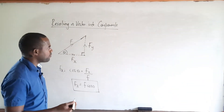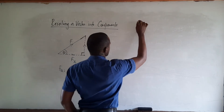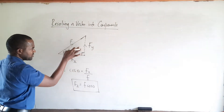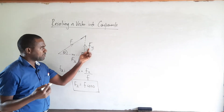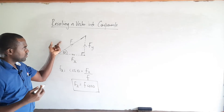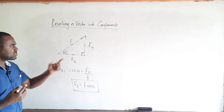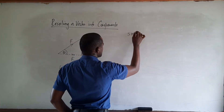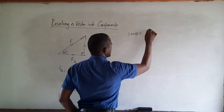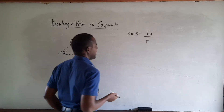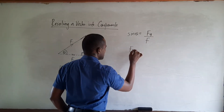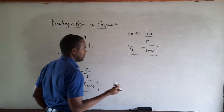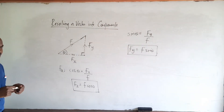Now let's examine the vertical component Fy. Since we're talking about the vertical component, this component is opposite to the angle, and we're dealing with the side opposite to the angle as well as the hypotenuse. This means we use the trig ratio sine. So sine theta equals opposite Fy divided by hypotenuse F, from which we get that Fy is equal to F sin theta. The vertical component is given as the product of the force F and the sine of angle theta.